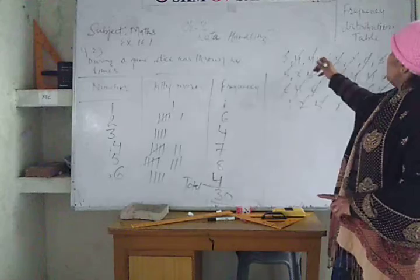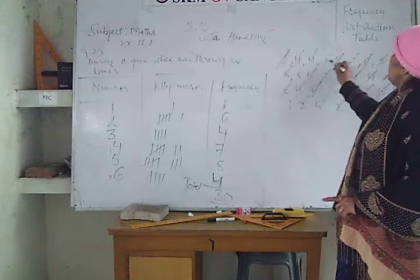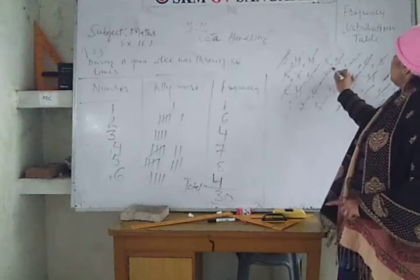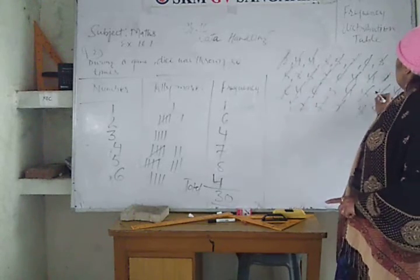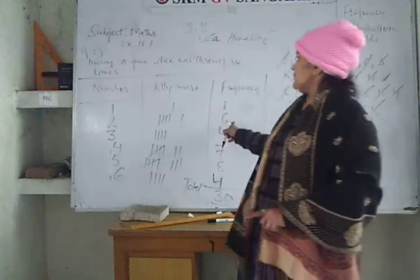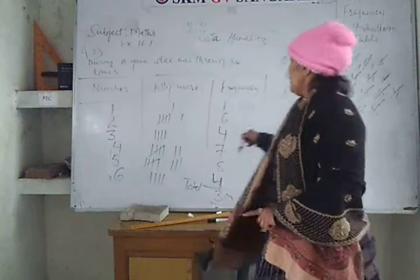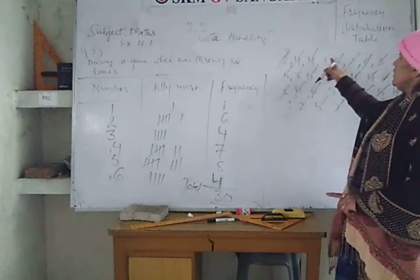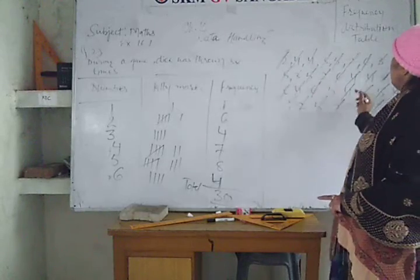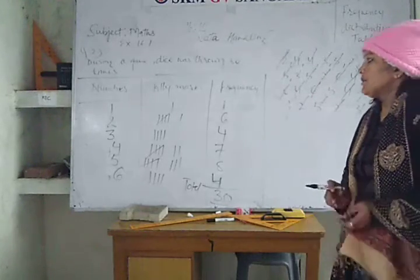Now 2 — how many times? 2 appears 6 times. And 3 — how many times? 3 appears 4 times.